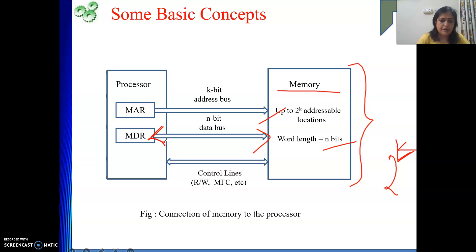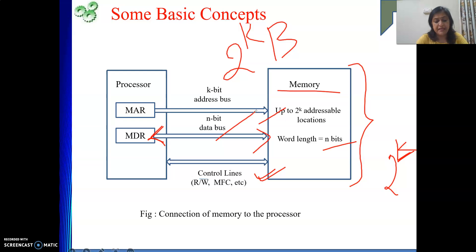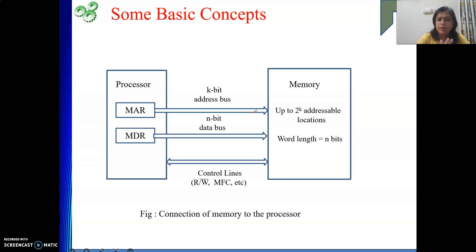On the control lines we have the read/write line and the chip select line. So in this memory, k bits are used for addressing one location, meaning the number of locations is 2k. If the addressable unit is a byte, then it is 2k bytes of memory. N bits is your data bus width, meaning in one memory operation we can read or write a maximum of n bits. So connecting memory to the processor requires three sets of connections: address, data, and control lines. I have not yet told what the chip select line is — I will talk about that shortly.